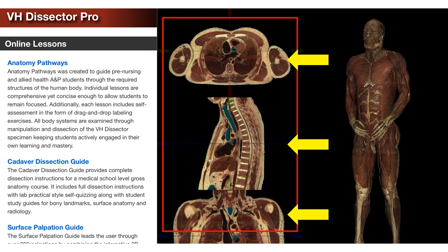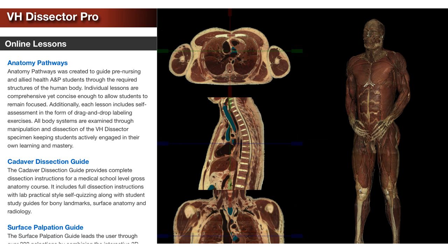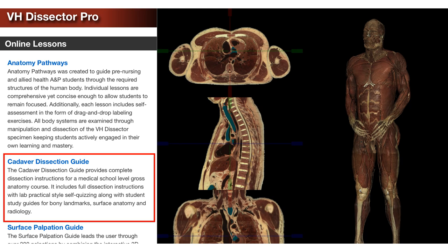The leftmost lesson panel has many great resources. We're going to focus on the cadaver dissection guide, as it can be very useful in preparing for the regional lab practical exam. This section contains labeled images of relevant anatomical structures and quizzes.